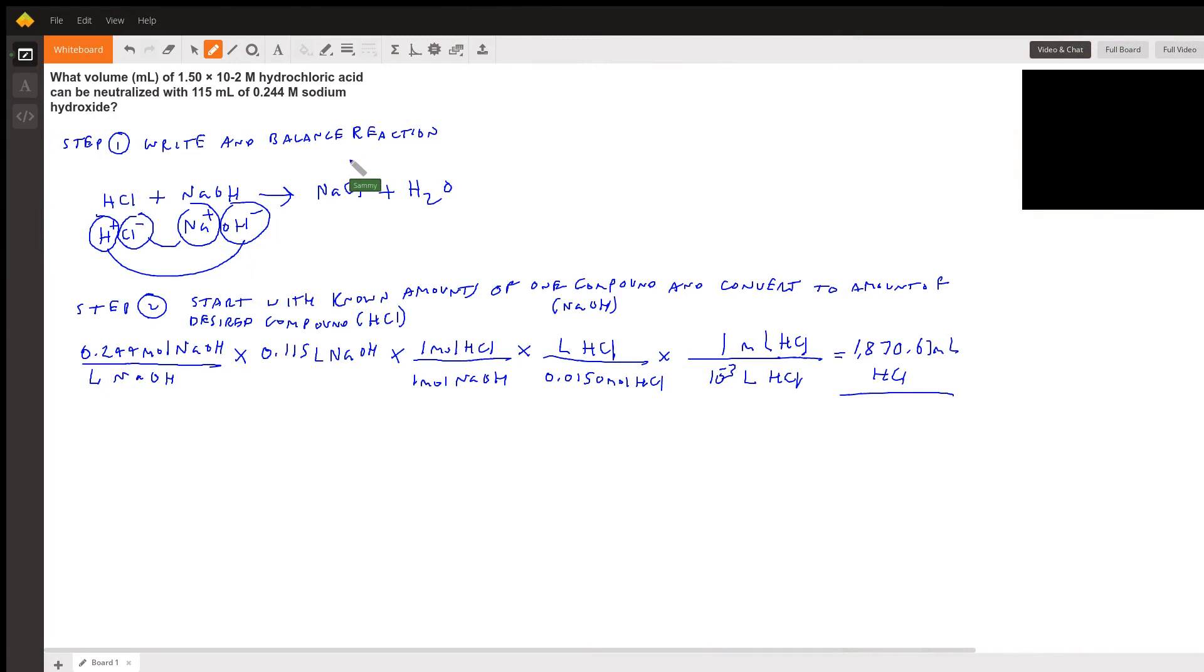Hello, the question is: what volume in milliliters of 1.50 times 10 to the negative 2 molarity hydrochloric acid can be neutralized with 115 milliliters of 0.244 molarity sodium hydroxide? This problem has two steps.